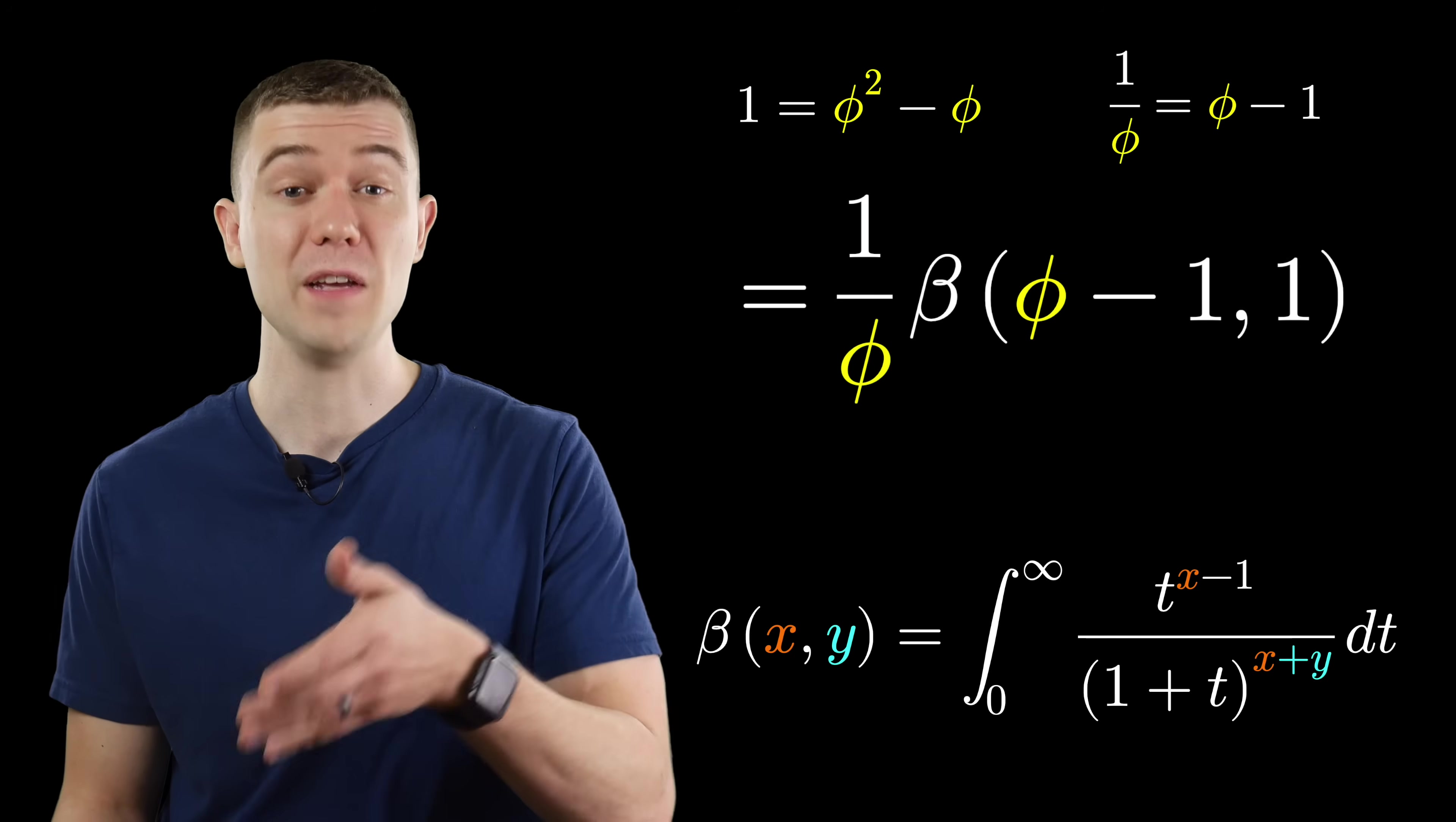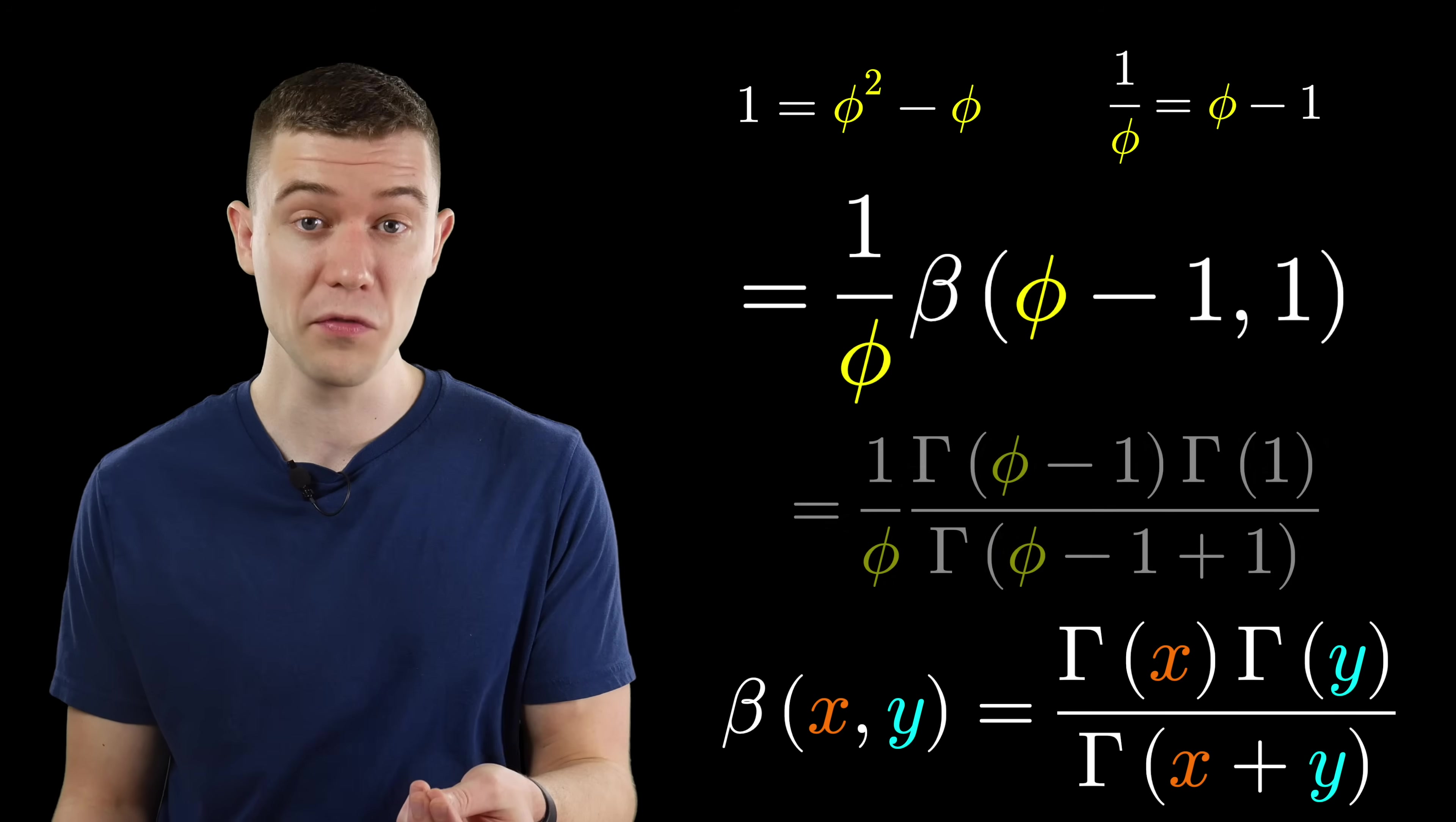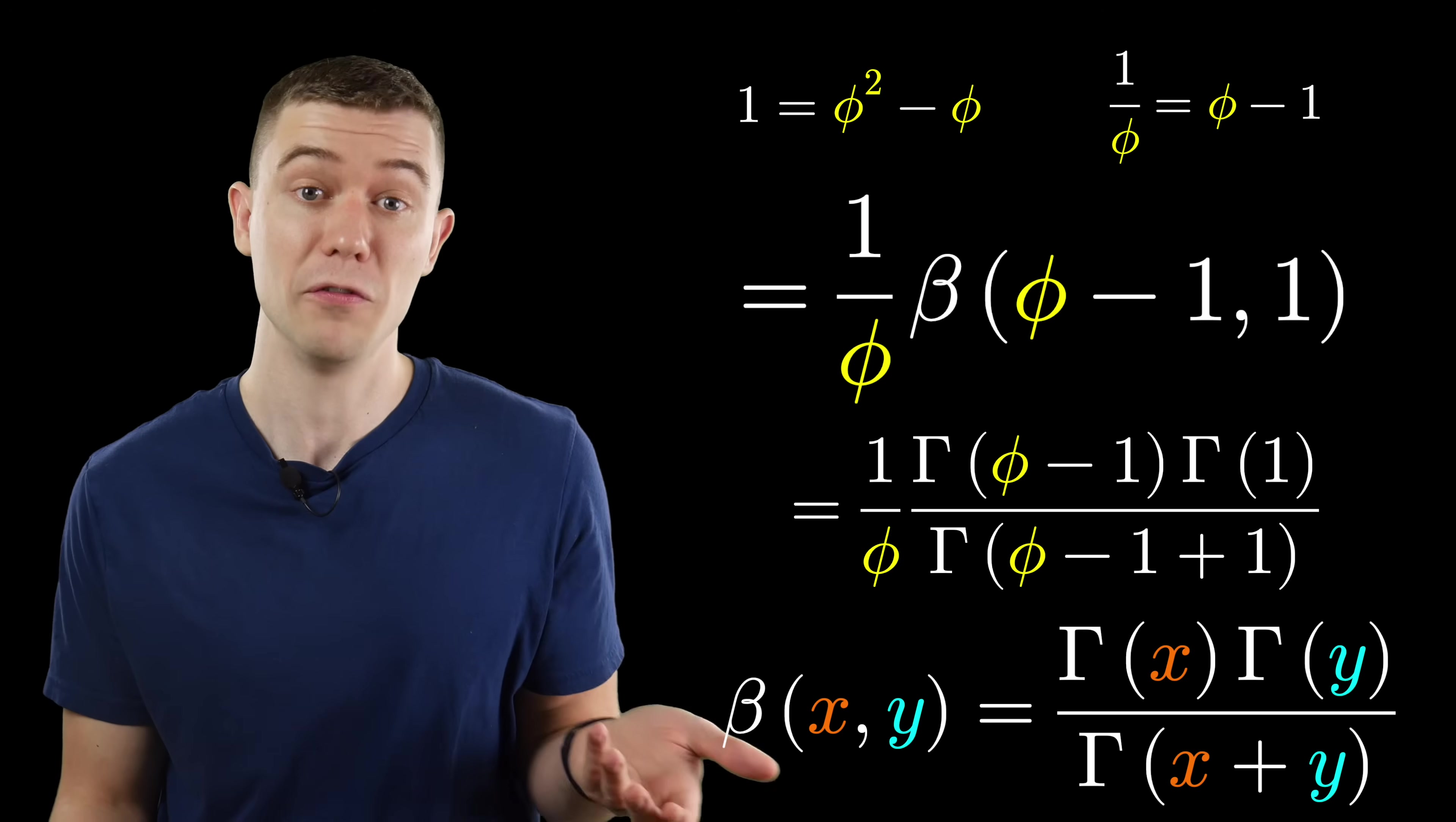The beta function actually does evaluate to a combination of gamma functions. So what we have is 1 over phi times gamma of phi minus 1, gamma of 1, divided by gamma of phi minus 1 plus 1, gamma of phi.